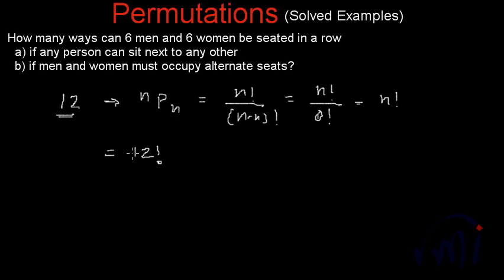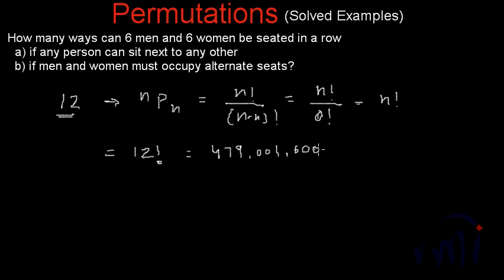So it will be equal to 12 factorial. There will be total 12 factorial ways in which 12 people can occupy 12 places. The value of 12 factorial is actually equal to 479,001,600. So these many ways are there in which 12 people can occupy 12 places — it's a big number.